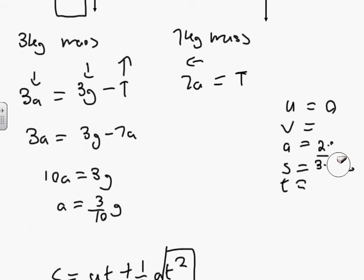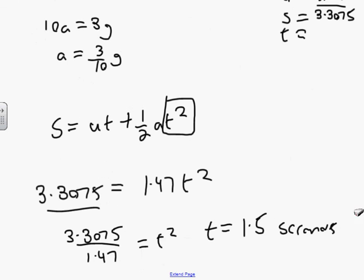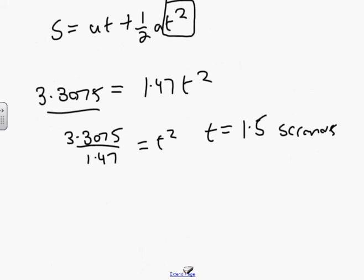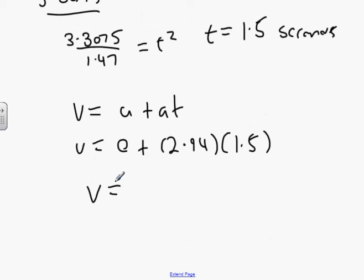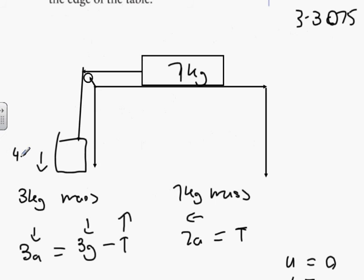One thing we forgot there. Remember I got t equals 1.5 seconds? I should also find the velocity I hit the ground at, because the velocity I hit the ground at is also the velocity of the 7 kilogram particle just as the string goes slack because they're connected to each other. So v equals u plus at. v equals 0 plus 2.94 times 1.5. 4.41. You hit the ground at 4.41 seconds and then you stop dead in your tracks. A little bit of a bounce, let's be honest about it, because it's reality.